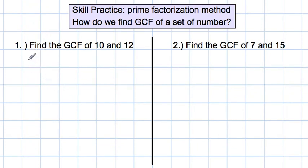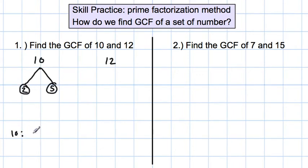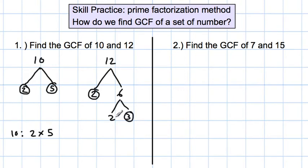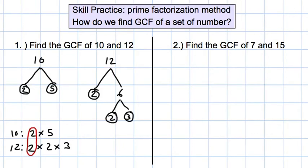Guided practice number 1: we're going to find the greatest common factor of 10 and 12 using the prime factorization method. 10 is 2 times 5 — both prime factors. So 10 has prime factors 2 times 5. For 12, we have 2 times 6, and then 2 times 3. So 12 is 2 times 2 times 3. Which one do they have in common? You circle the pairs — that's the only one they have in common. So the greatest common factor is 2. They only have the 2 in common.